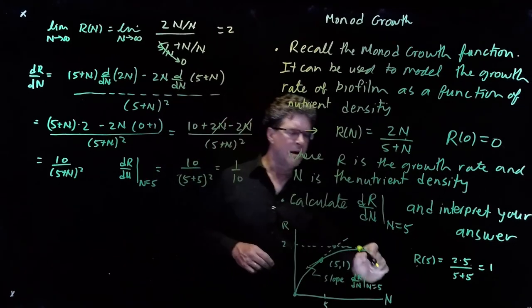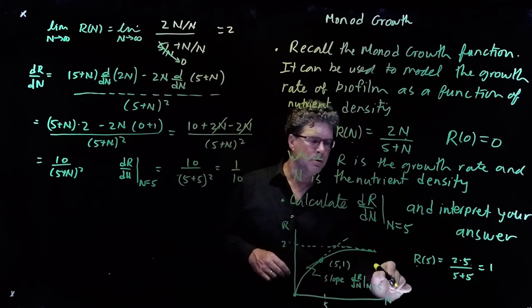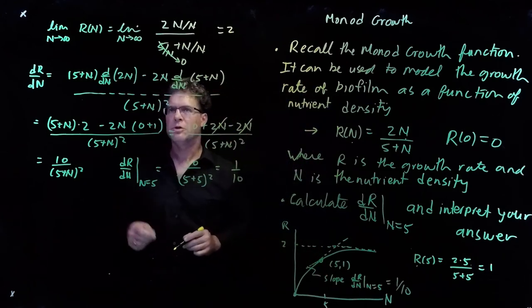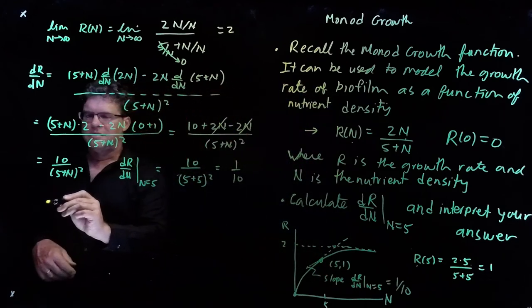So the slope at n equals 5 is equal to 1 tenth. And we interpret this as the rate of change